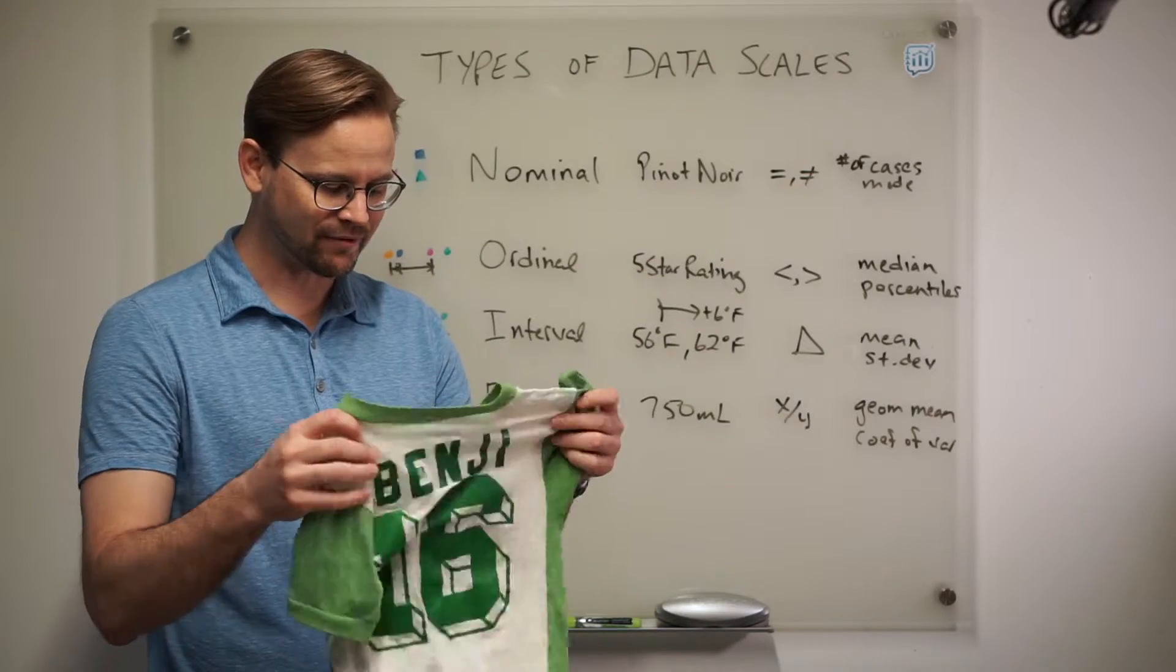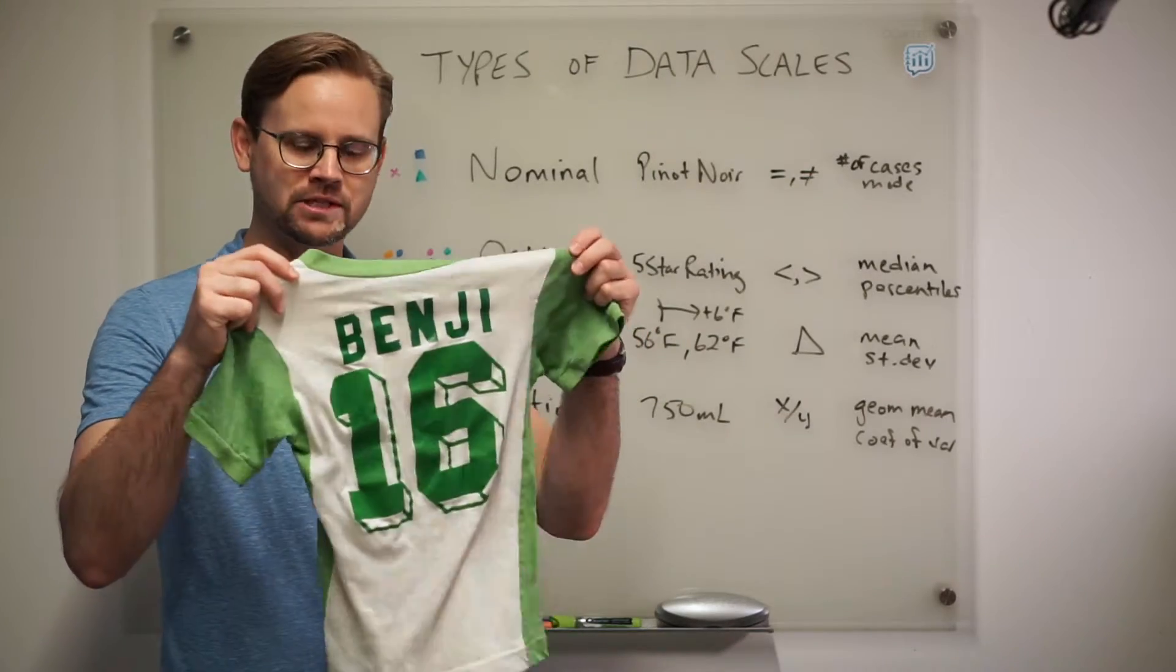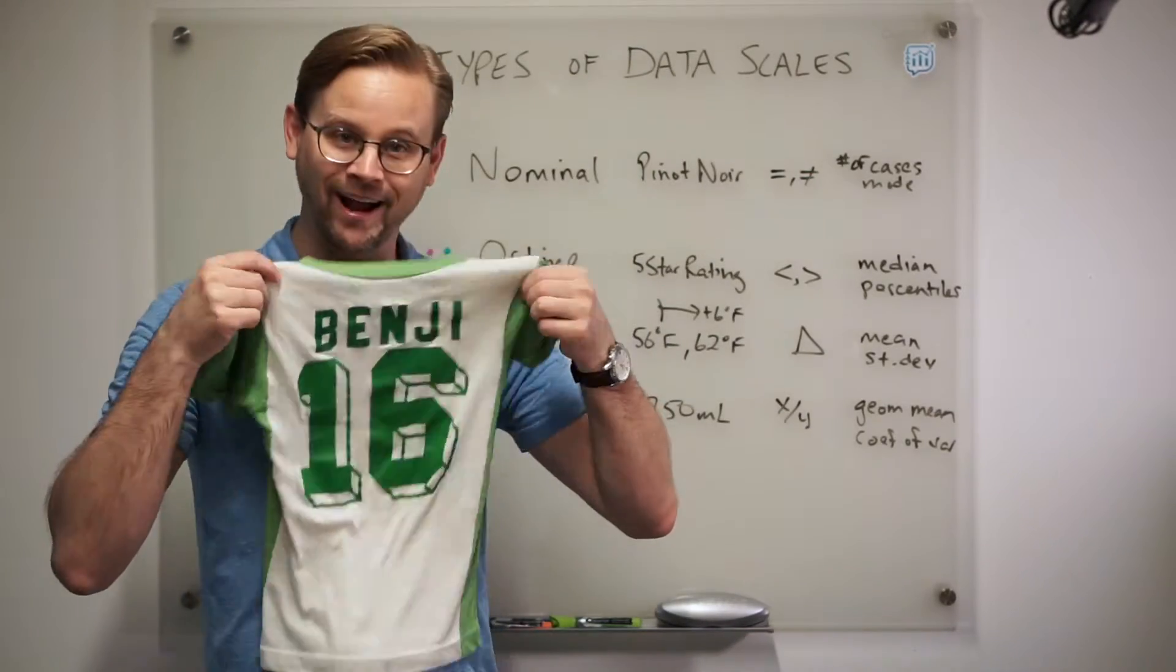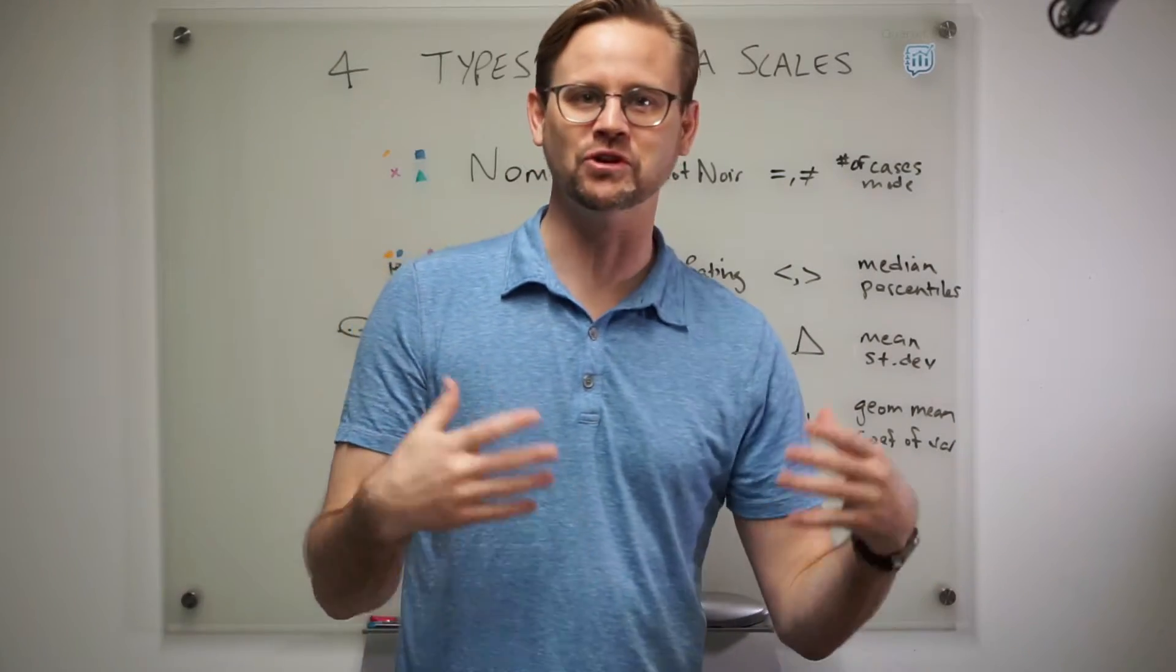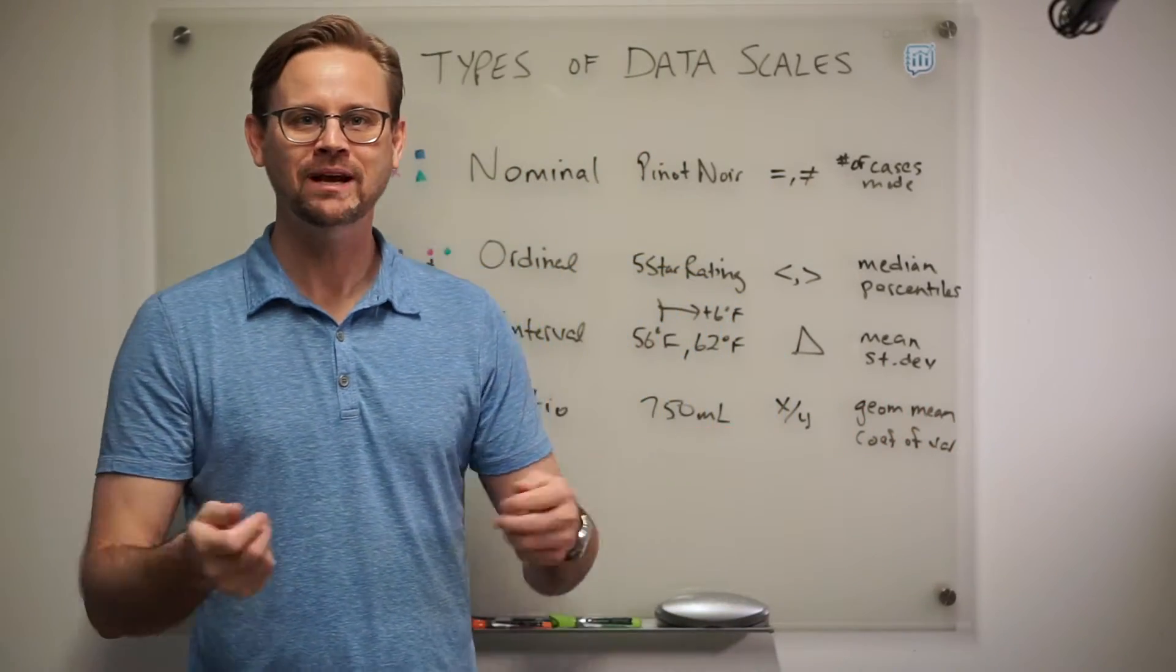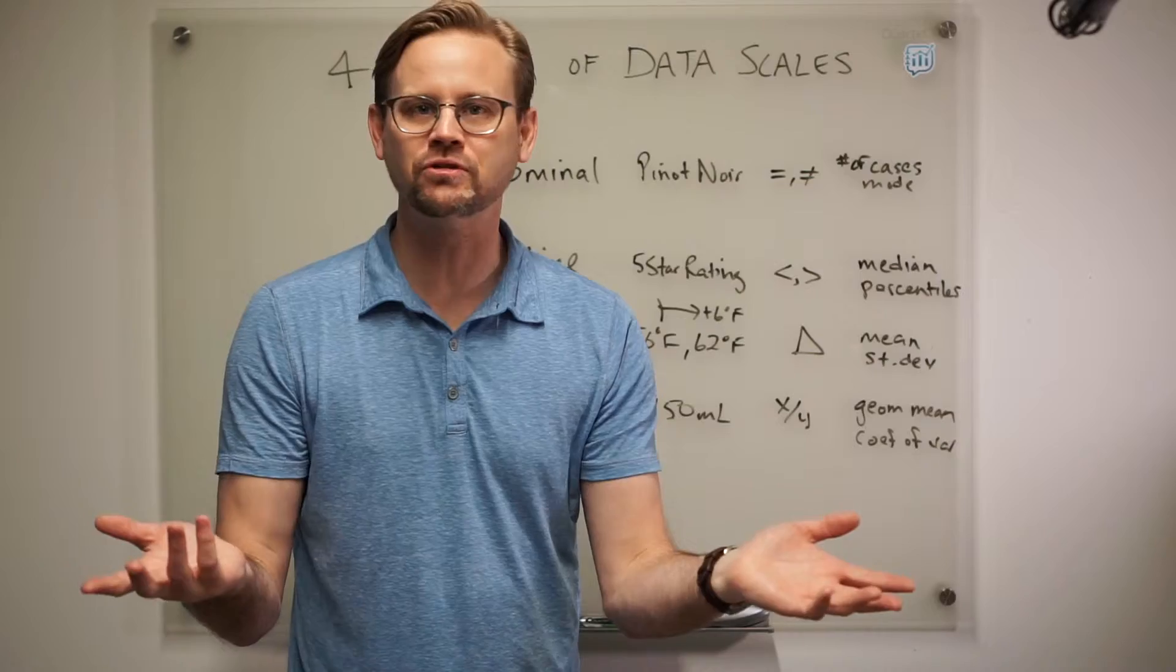But one example they give would be, let's say we had a soccer team. Here's a little soccer jersey. And let's say we handed out jerseys to all the players on the team. We just gave the numbers arbitrarily, though. There was no meaning to the numbers in this example.